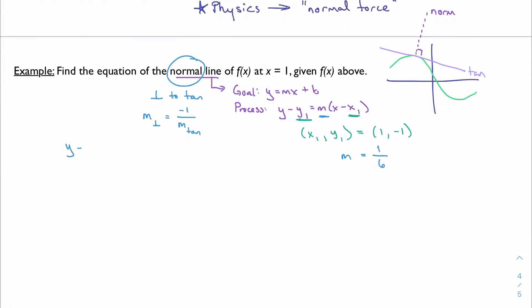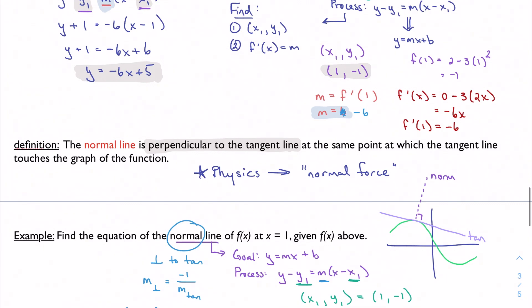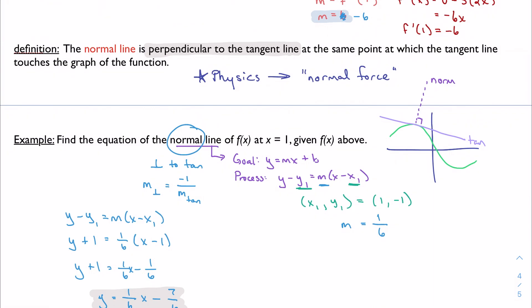Well, at this point, the process is exactly the same, right? Take your point-slope form. Substitute in all your information. And simplify. 1 sixth x minus 1 sixth. Subtract 1. I get 1 sixth x minus 7 over 6. If we were to graph all of these, we would see that our equation of the tangent line does in fact act as a tangent line and that this line is perpendicular.